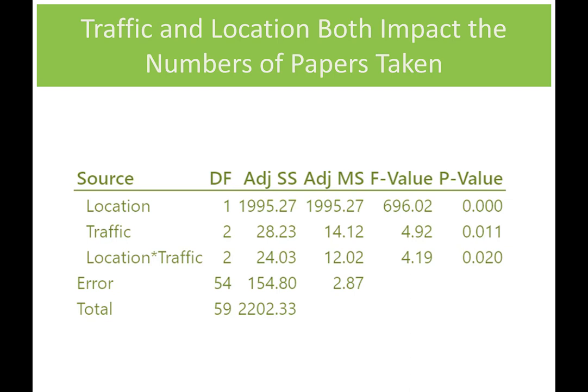Traffic and location both impact the number of papers taken. We have not only a low p-value for traffic, but also a low p-value for location. And now this third factor has shown up — this interaction term, location multiplied by traffic. We're not totally sure what that is, but it looks significant too based on its p-value.